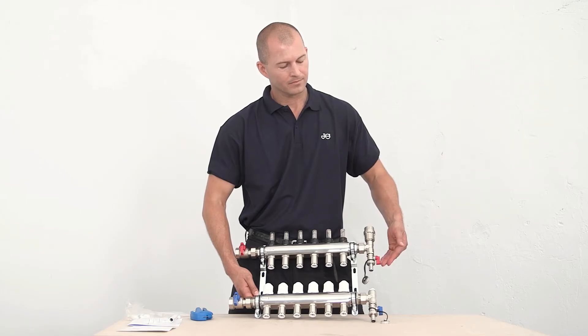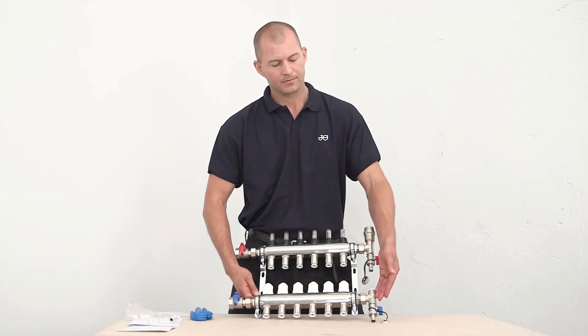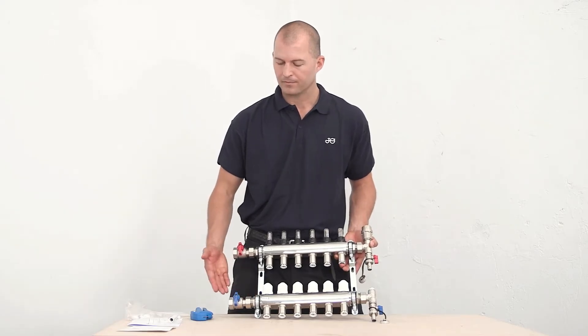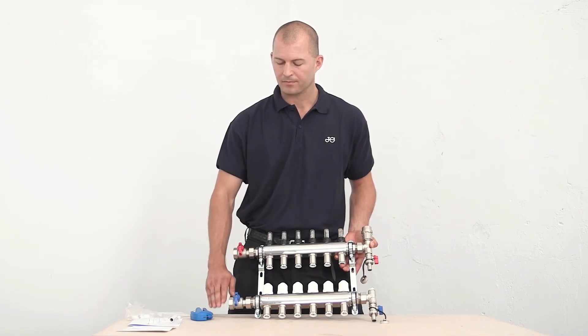As you can see, we have an automatic air vent, fill connection, and on the bottom we have the drain connection. On the opposite ends, we have two isolated valves. The flow is on top and the return is connected to the bottom rail.